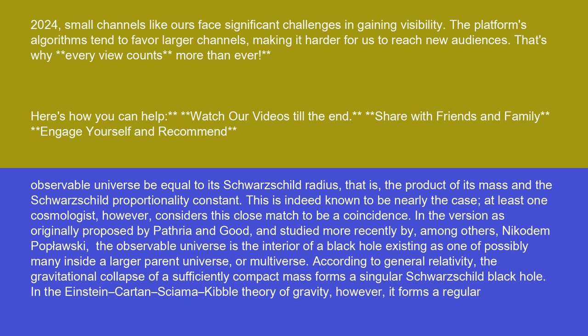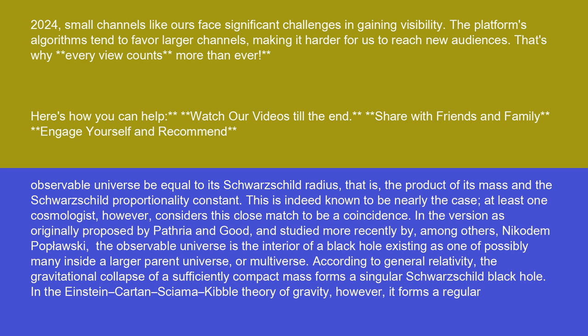In the Einstein-Cartan-Sciama-Kibble theory of gravity, however, it forms a regular Einstein-Rosen bridge, or wormhole. Schwarzschild wormholes and Schwarzschild black holes are different mathematical solutions of general relativity in the Einstein-Cartan theory, yet for observers, the exteriors of both solutions with the same mass are indistinguishable.